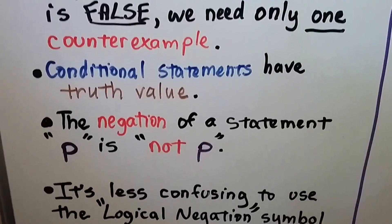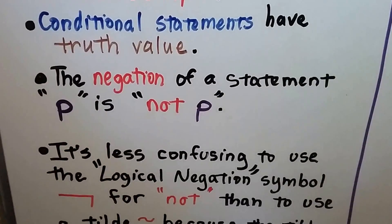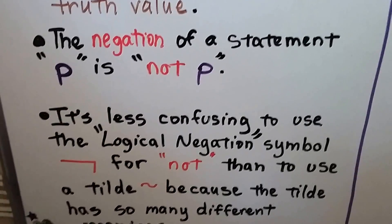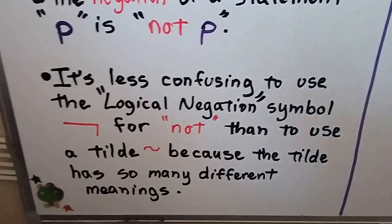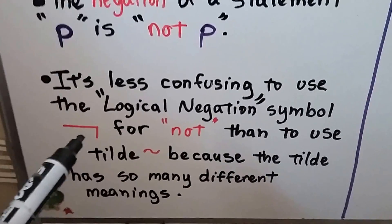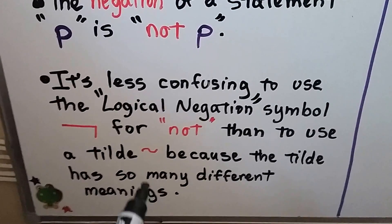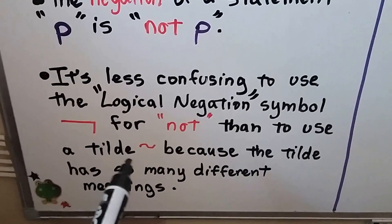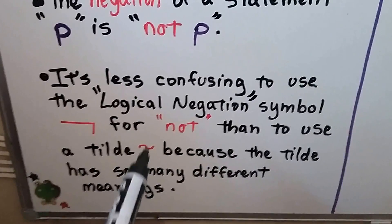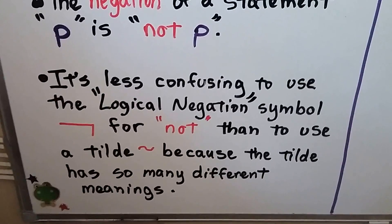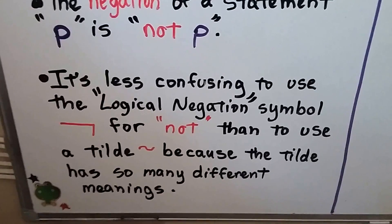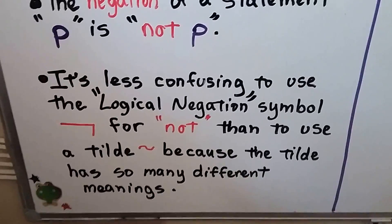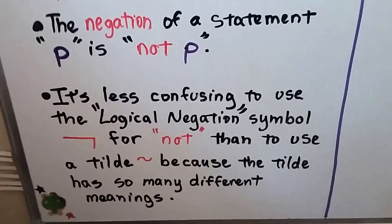Conditional statements have truth value — there's value to how true they are. The negation of a statement p is not p; it's the opposite. It's less confusing to use the logical negation symbol for 'not' rather than the tilde, because the tilde has so many different meanings in mathematics — similar, probability, matrices. This is just advice: I use this symbol for 'not' usually, and it'll make it less confusing for everybody.